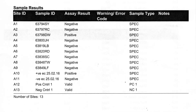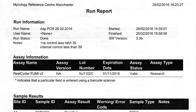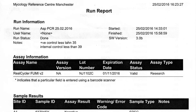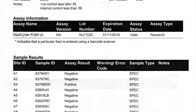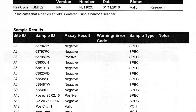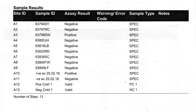A negative result is where we have a CT value of 0. A weak positive result is a CT value between 36 and 38, and a positive result is where we have a CT value of less than 36.